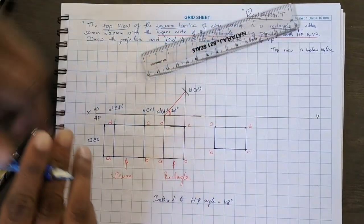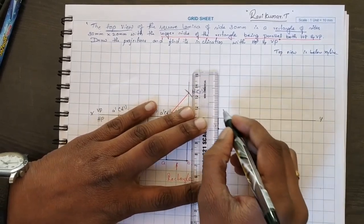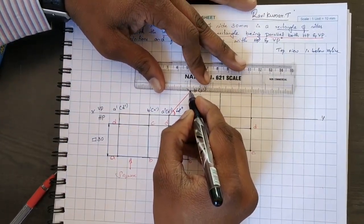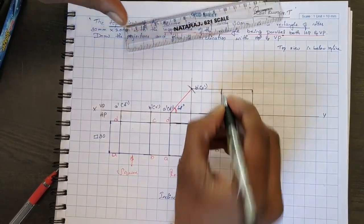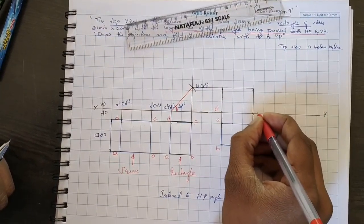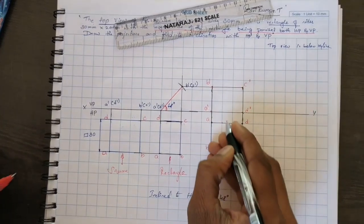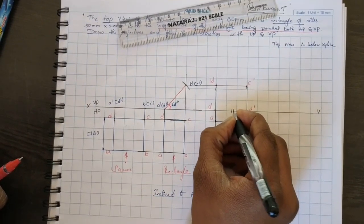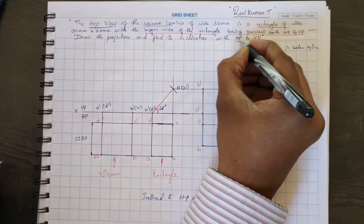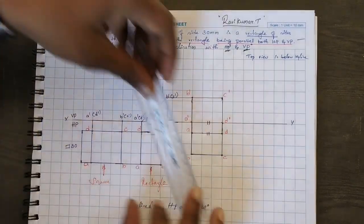After that, extend the projection line upward up to the final point. Now see: this point is your A-dash, this point is your D-dash, this point is your B-dash, and this point is your C-dash. See, you can confirm that the longer side is being parallel to both planes. So the second condition is over.